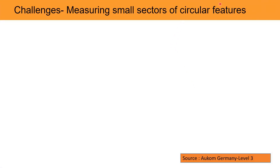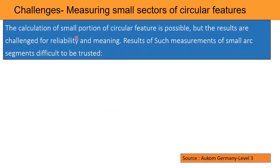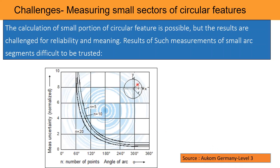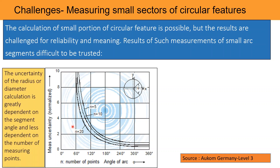The calculation of a small portion of a circular feature is possible, but the results are challenged for reliability and meaning. The result of such measurement of a small arc segment is difficult to be trusted. An organization in Germany also makes the same statement about the measuring problem of small arcs, demonstrating that increasing the number of points in a small sector also could not help. The uncertainty of the radius or diameter calculation is greatly dependent on the segment angle and less dependent on the number of measuring points.